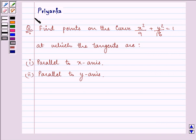Hello and how are you all? Today my name is Priyanka and let's solve this question: Find points on the curve x²/9 + y²/16 = 1 at which the tangents are parallel to x-axis and parallel to y-axis.